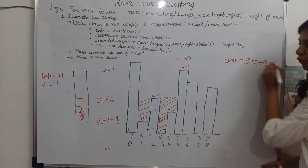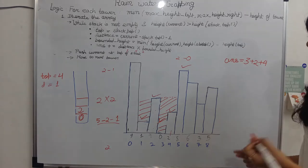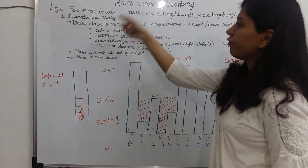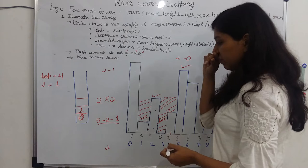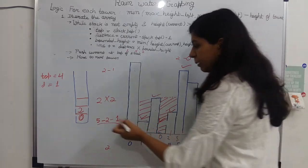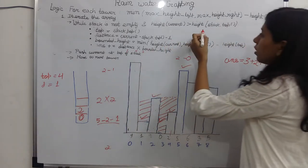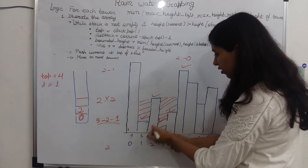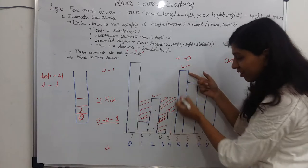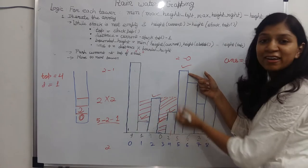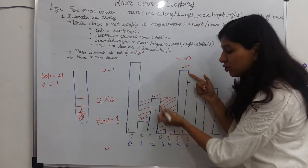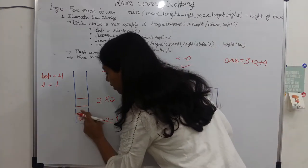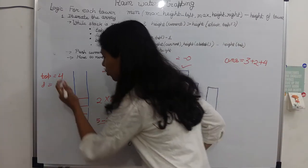So 3 plus 2 plus 4. Now we continue the loop. The top is 2 — meaning that element — and the current is bigger while this one is small. So we update, putting index 2 to top and continuing.